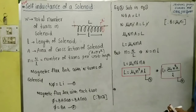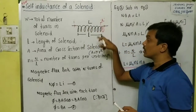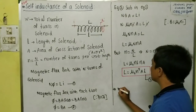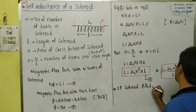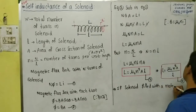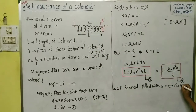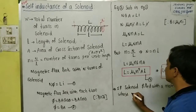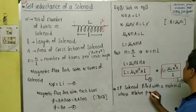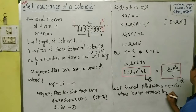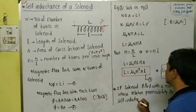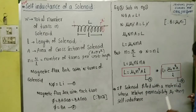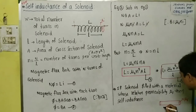If the space inside the solenoid is filled with a material — for example, a soft iron core — whose relative permeability is μr, what happens to the self-inductance formula? Previously the solenoid was empty (free space), but now we insert a material with relative permeability μr.